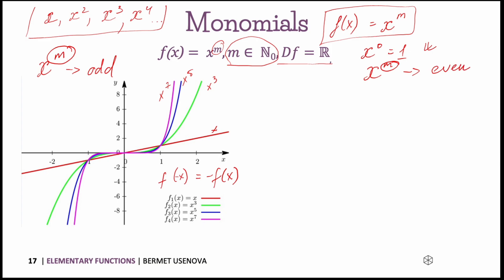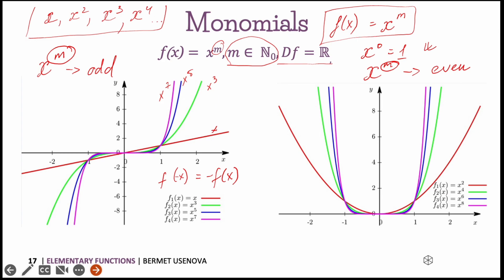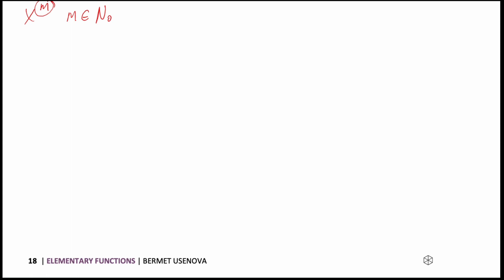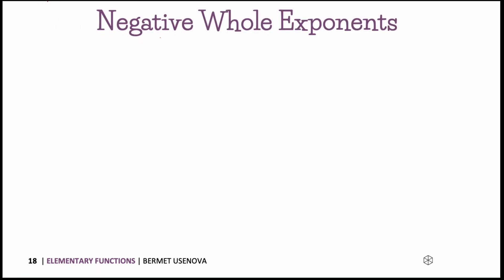When m is an even number the graphs look a little bit different. This is x squared, this is x to the power of 4, this one is x to the power of 6, and this one is x to the power of 8. If we increase m you can see how the graph changes. This is an even function where f(−x) = f(x). Now, m is a natural number so it's positive — but what if m is negative? For that we look at negative whole exponents, not fractions.